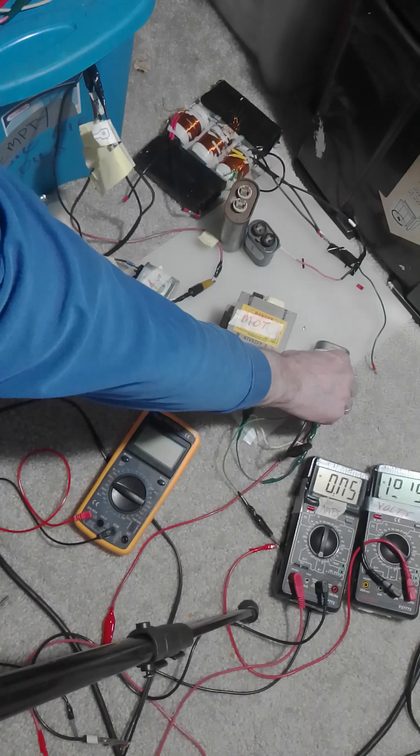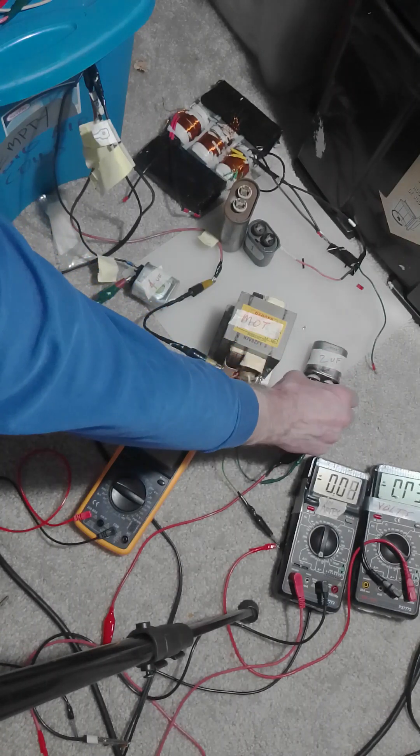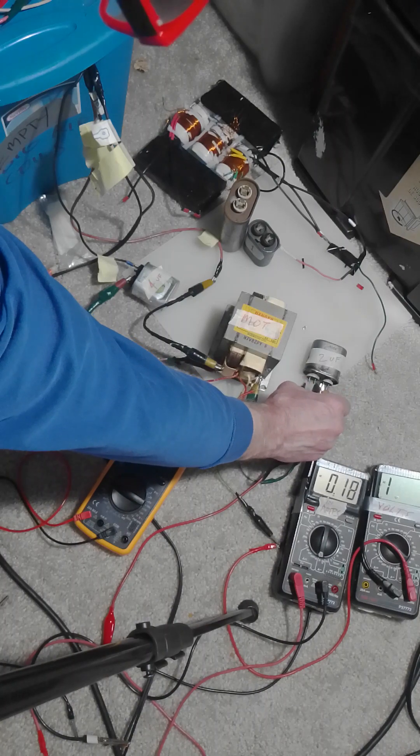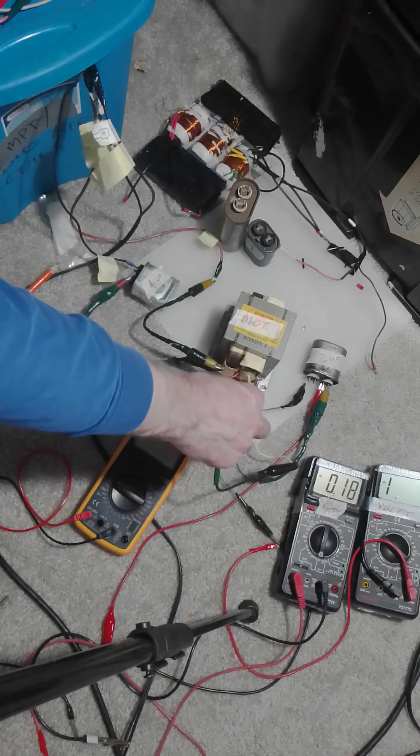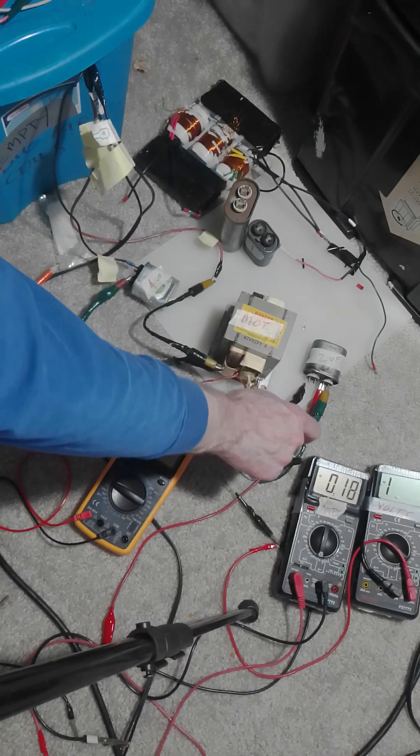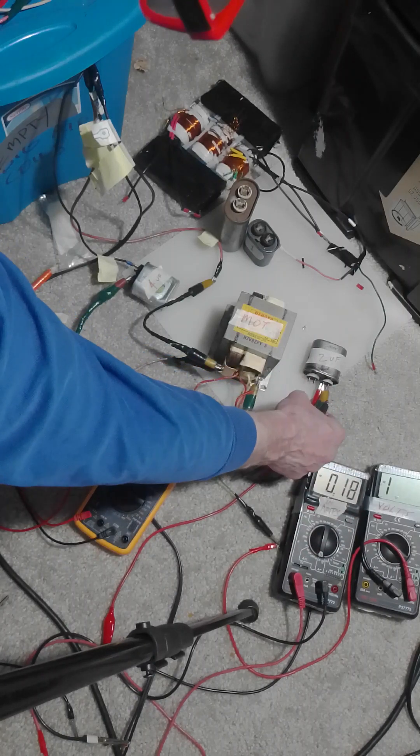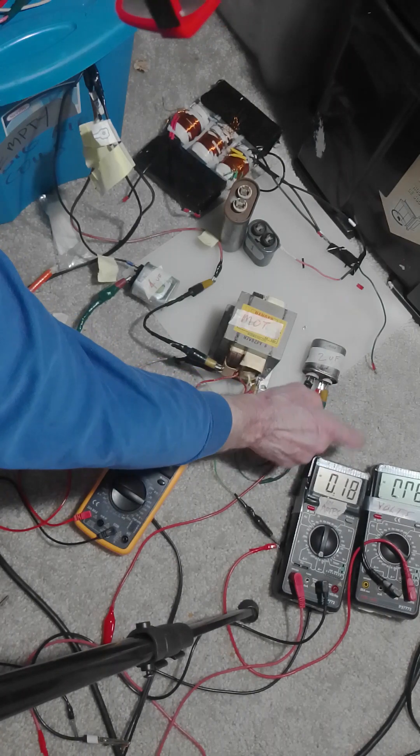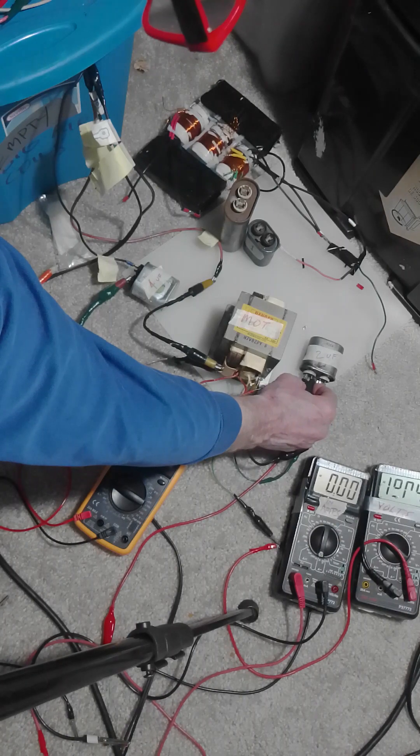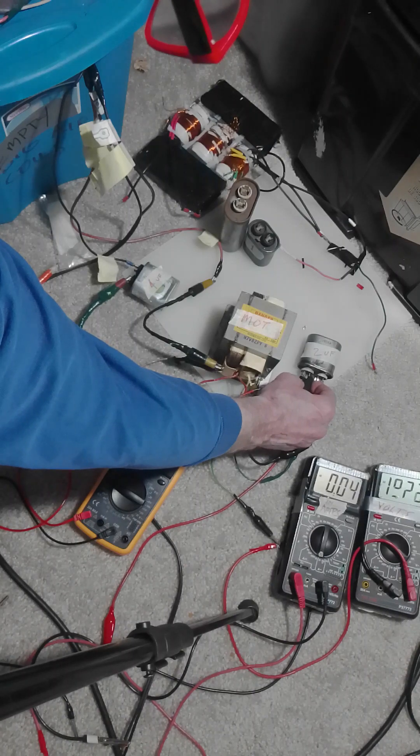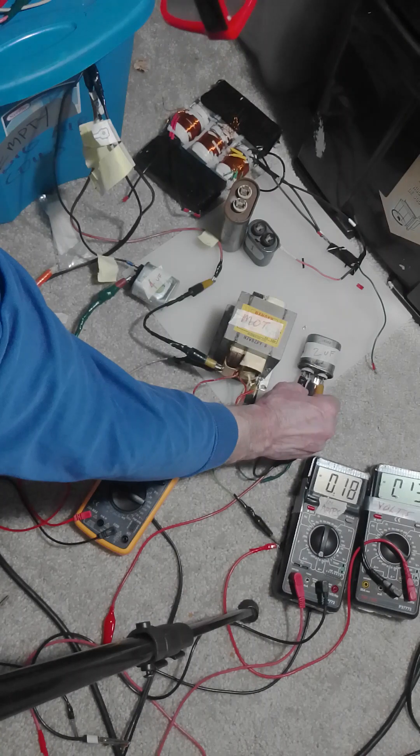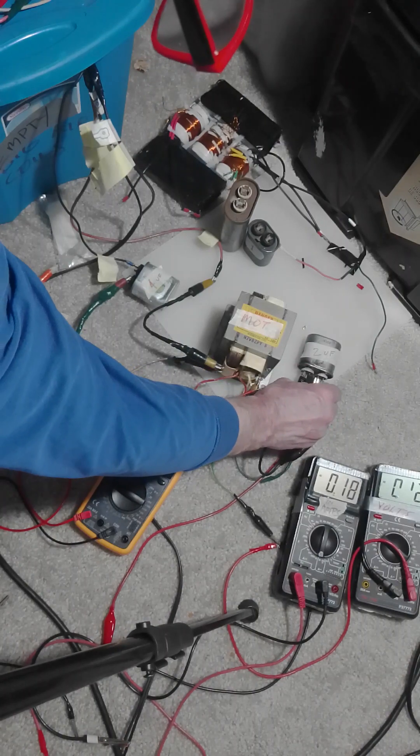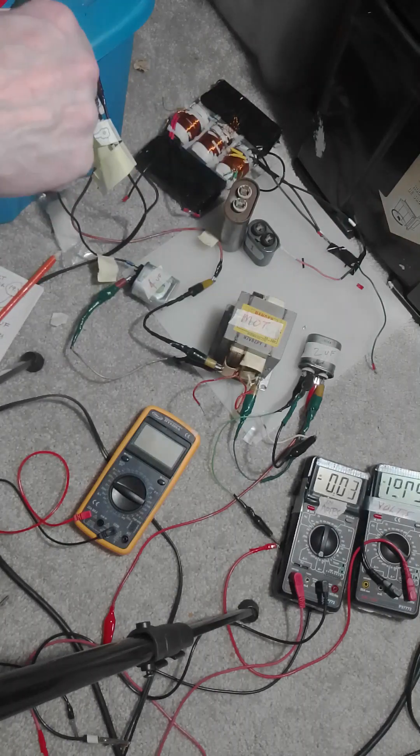And now I have this 19.2 volts AC across this 2UF cap. And let me show you this again. Now watch the amps input. I disconnect this. Now I connect it. It's disconnected, it goes up to like 180 milliamps. I'm disconnecting one of the high voltage leads from the microwave oven transformer to the 2UF cap. Now watch when I connect it - it goes to zero. Zero. And then it builds back up.